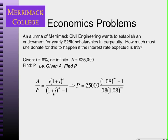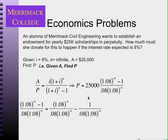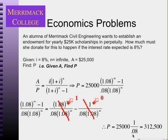Starting from the A-given-P formula and solving for P, when n approaches infinity the (1+i)^n term simplifies so that the formula reduces to P = A/i — just one over the interest rate. So the amount she needs to invest is $25,000 divided by 0.08, which equals $312,500.